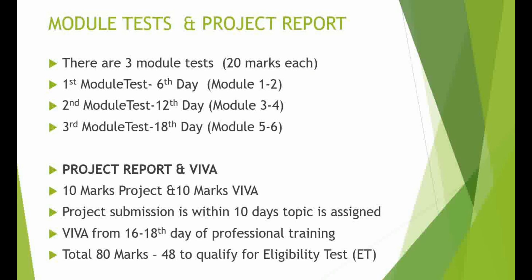The project report carries 10 marks and viva carries 10 marks. Project submission is within 10 days of the topic being assigned during your professional training. Topics are allotted in groups of three to four members. Viva is conducted from day 16 to 18 — for virtual batches, viva is conducted online. Total marks are 80: 60 for module tests and 20 for project and viva. You need 48 out of 80 to qualify for the eligibility test.